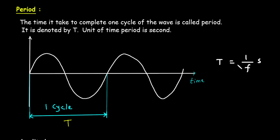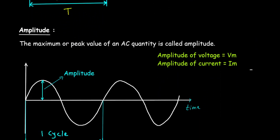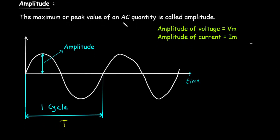T, that is time period, is equal to 1 upon frequency. Then next is amplitude. The maximum or peak value of an AC quantity is called amplitude. For a current waveform, this maximum value is represented by I_M — called maximum current, peak current, or amplitude of current. And if this is a voltage waveform, then this amplitude is represented by V_M — called maximum voltage, peak voltage, or amplitude of voltage.